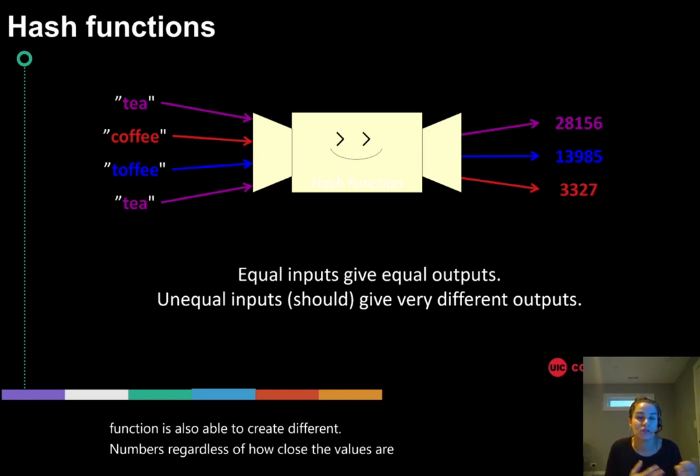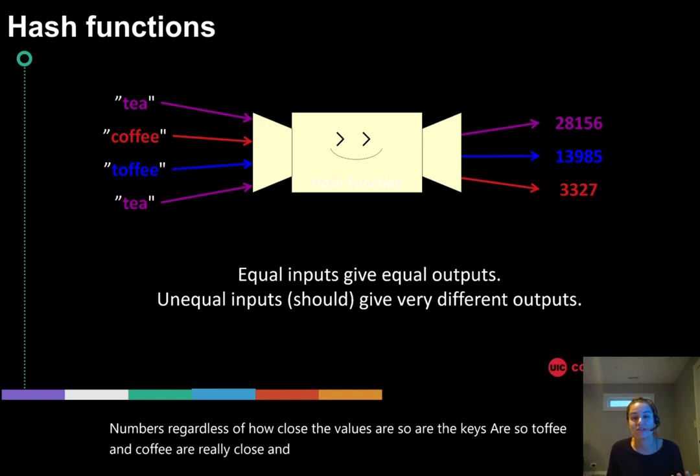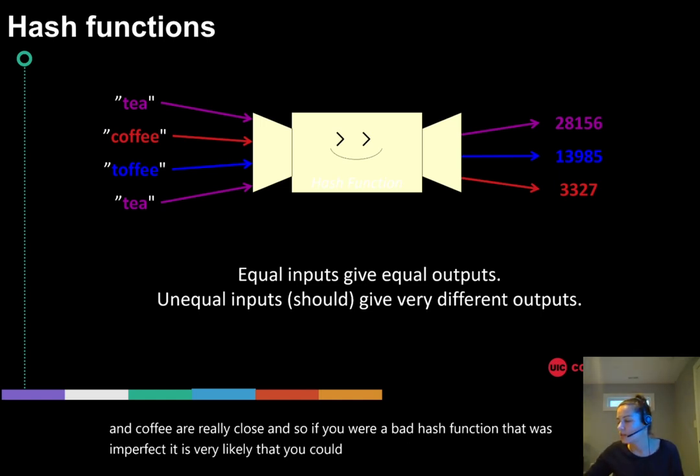And a good hash function is also able to create different numbers regardless of how close the values or the keys are. So toffee and coffee are really close. And so if you were a bad hash function that was imperfect, it is very likely that you could hash those to the same index because they're so similar.